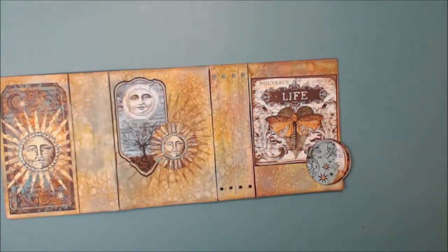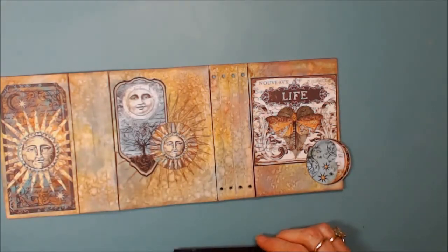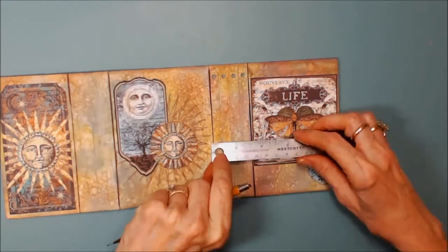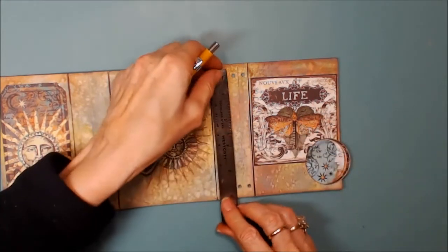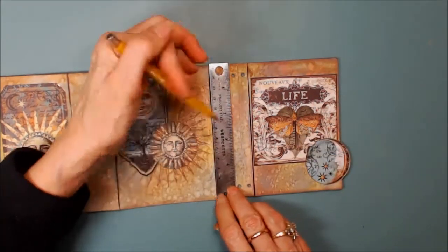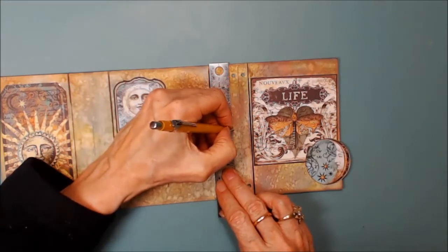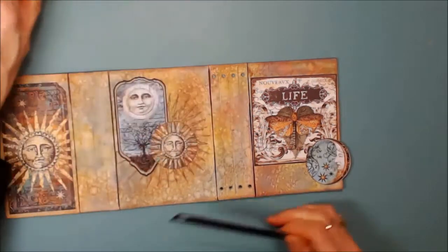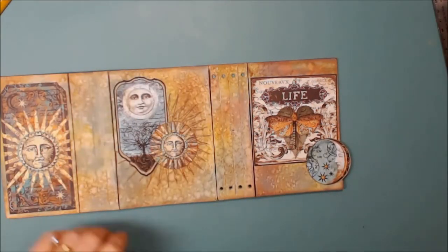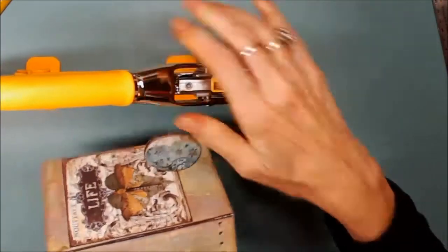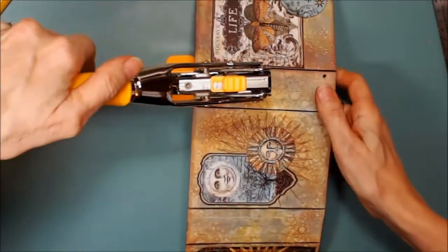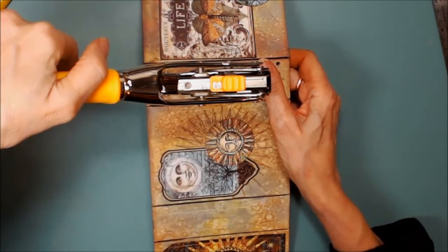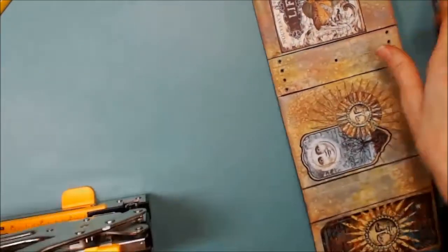I'm going to put a hole in the back of the spine so that I can do a wrap around. So I'm going to center it. Right here, I'm just going to use my Big Bite to punch a hole. Use the smaller setting, which is the one-eighth. There we go.